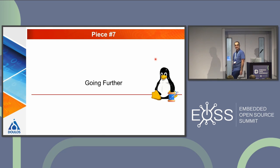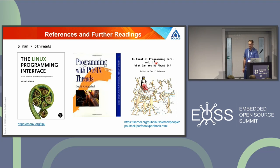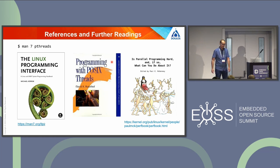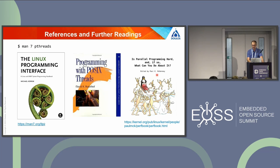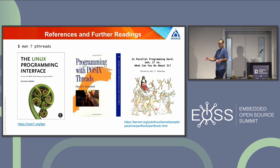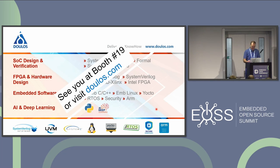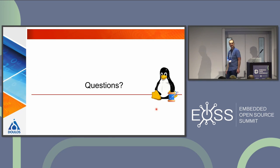There is more to say about signal and processes but I'll skip that for now. If you are interested in going further, there are great books. The starting-point book is Michael Kerrisk's — a really great book. There is also an older book from David that is still relevant. And if you want to learn more about parallel programming, concurrency, threads and much more, there is this really great book from Paul McKenney — available online — which Paul has been maintaining and updating for 20 years. I hope you have enjoyed the talk. Come visit us at our booth or visit doulos.com if you want great training like this.